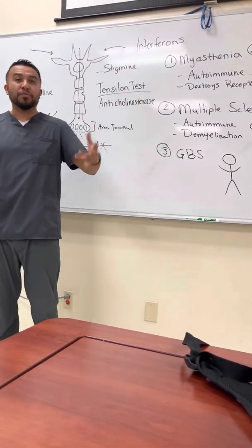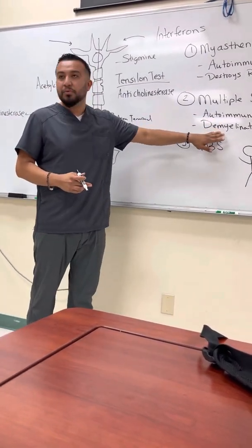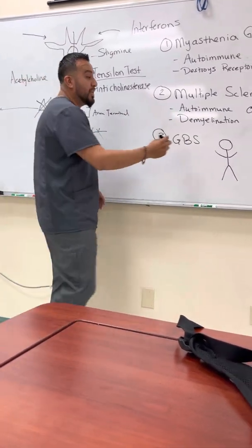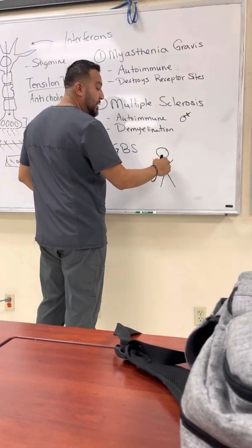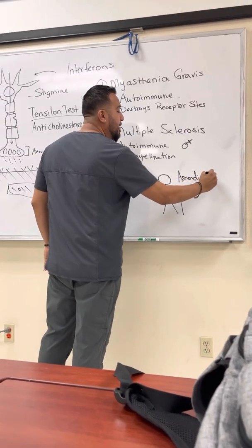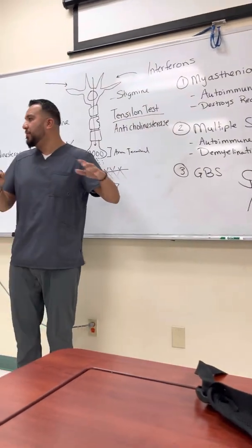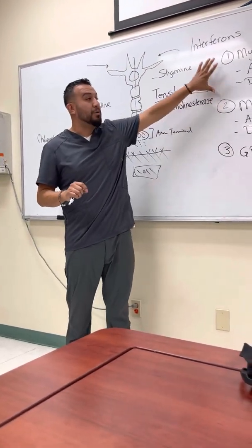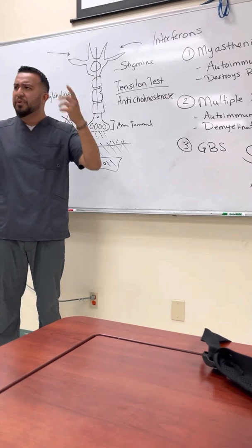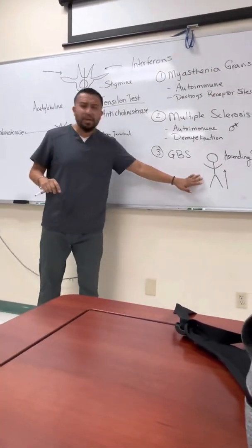Your immune system starts destroying all your myelin sheath from your feet upwards. This is an ascending paralysis, which is very different from the other conditions we just discussed. Ascending paralysis is a unique manifestation not shared with multiple sclerosis and myasthenia gravis, because those are systemic — all over the body. With GBS, it usually starts affecting your extremities first and little by little moves toward the center.